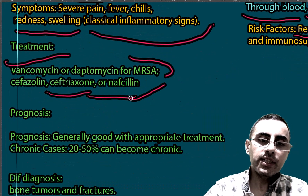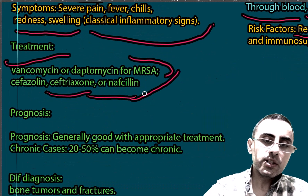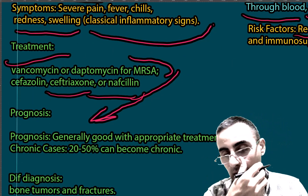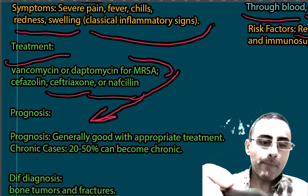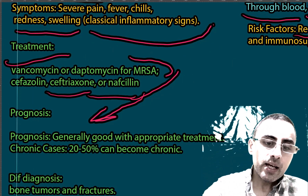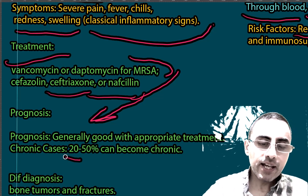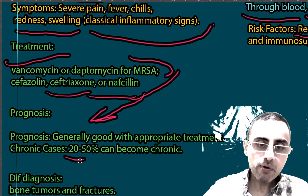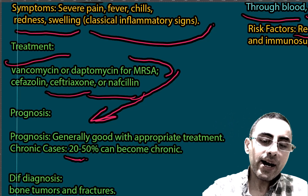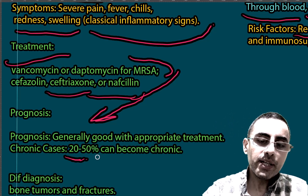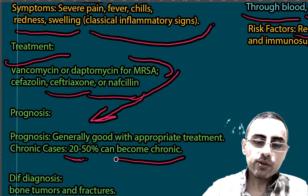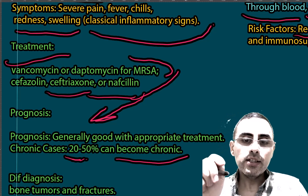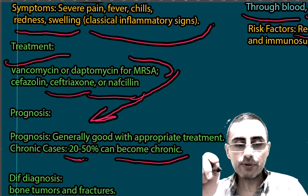If treatment is timely, prognosis is good in many cases. However, in about 20% of cases — and sometimes more — osteomyelitis can become a chronic condition, and chronic condition needs regular treatment.